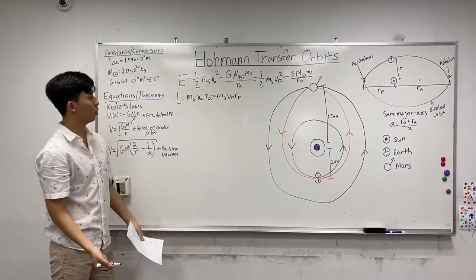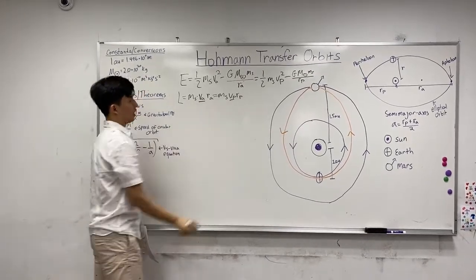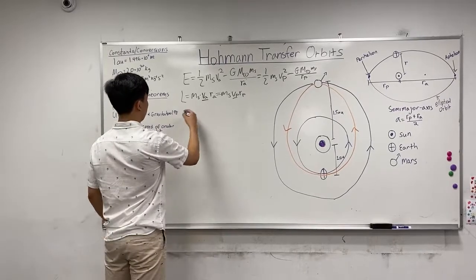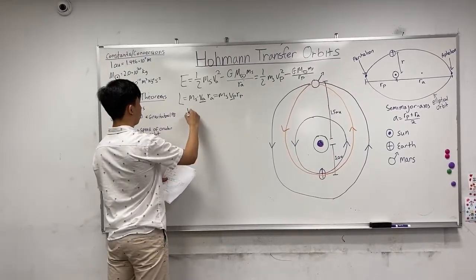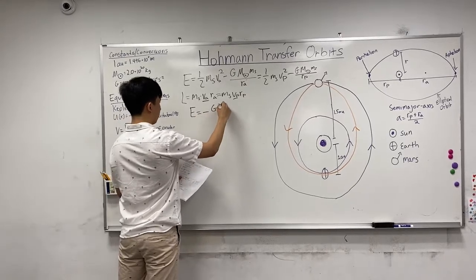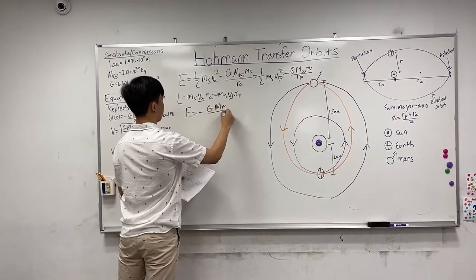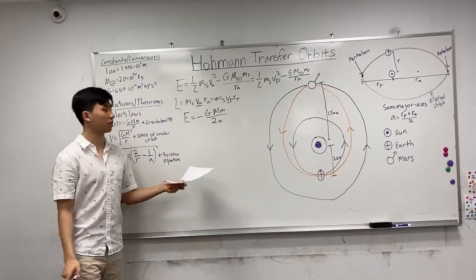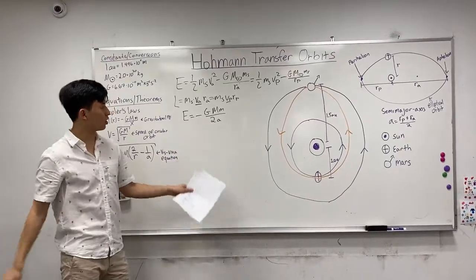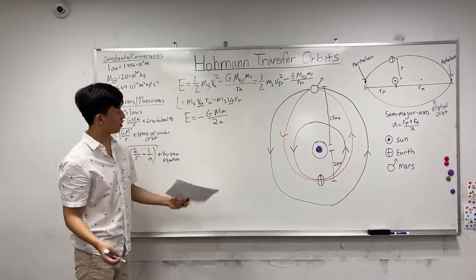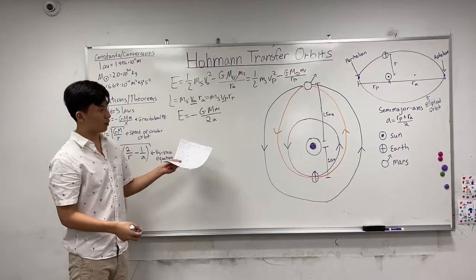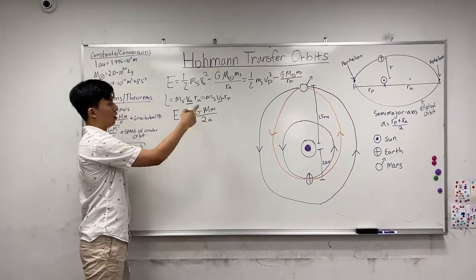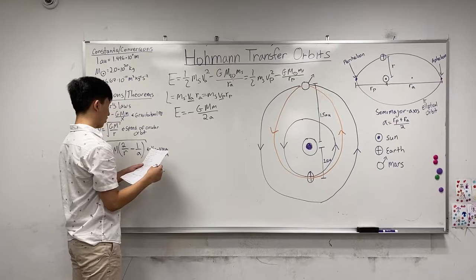We have these two conserved quantities and only two unknowns — the velocities at the aphelion and perihelion — while the radii and masses are known constants. After some manipulation, we get the total energy equals negative G·M over 2a. This looks familiar because if we replace a with r, that's the total energy of a circular orbit, which makes sense: if the ellipse is actually a circle, the semi-major axis is just r. Then, plugging E back into the energy equation, we get that v² equals G·M times (2/r − 1/a). This is the Vis-Viva equation, and we can use it to determine the velocity at any given point on an elliptical orbit.